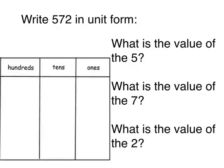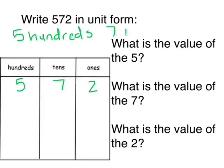Let's look at another example. Write 572 in unit form. In this number, two is in the ones place, seven is in the tens place, and five is in the hundreds place. We know that means there are going to be five hundreds, seven tens, and two ones.